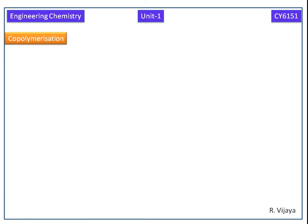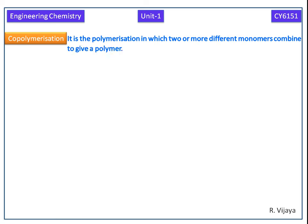Now we discuss co-polymerization. It is the polymerization in which two or more different monomers combine to give a polymer.